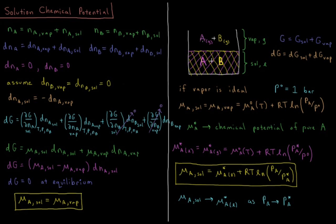We assume the vapor and solution together form a closed system, so we cannot exchange matter with the outside and the total number of moles of each substance is constant: dN_A = 0 and dN_B = 0. Additionally, we assume B's distribution between vapor and solution is static, so dN_B(vapor) = dN_B(sol) = 0, and we focus on changes for A. Since dN_A = 0, dN_A(sol) = −dN_A(vapor).